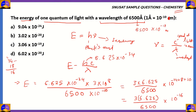Looking at the options, option C is automatically a strong candidate because options A, B, and D have orders of 10^(−20), 10^(−20), and 10^(−24) — all incorrect. We now confirm that 3.06 × 10^(−19) joules is the correct answer by completing the arithmetic.